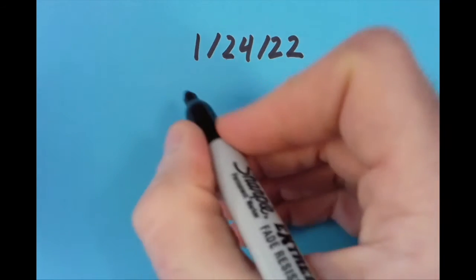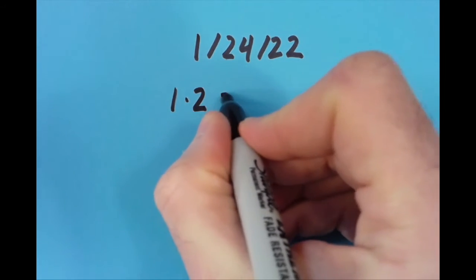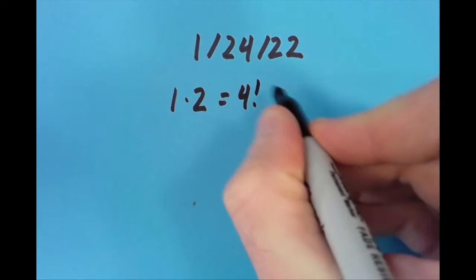Hello, today is January 24th, 2022 or 1/24/22, and what I'm going to do is make an equation out of the digits in today's date. I'm going to keep those digits in order, and so the first thing I did was I said 1 times 2 equals 4 factorial minus 22.